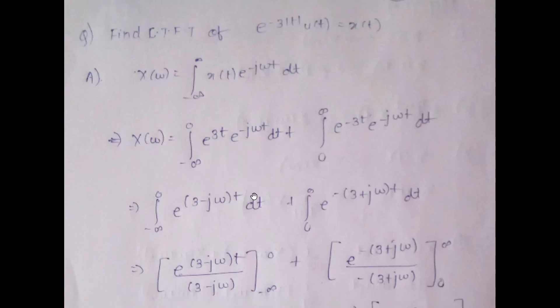The question says: find the CTFT of e raised to minus 3 mod t, multiplied by u(t), which is our signal x(t).